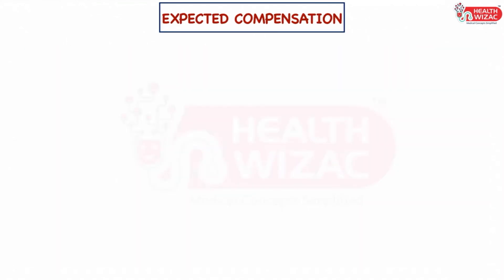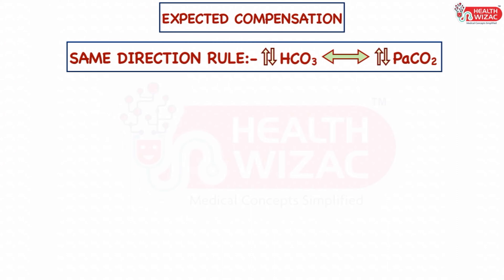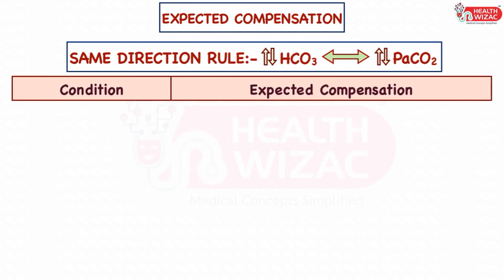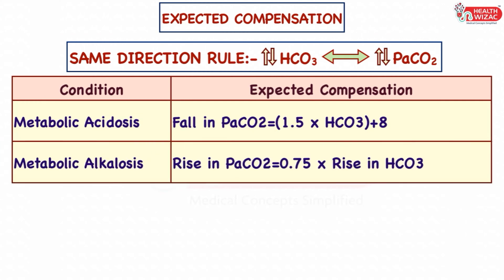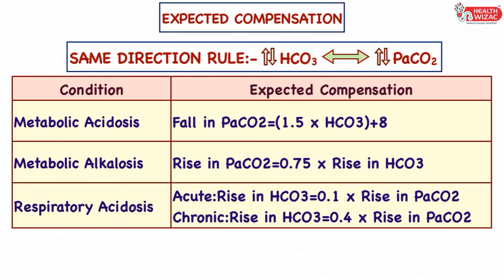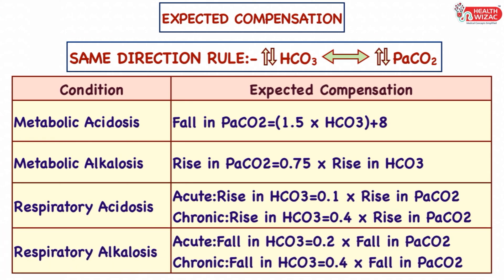Step 4 is to calculate the expected compensation. Compensation always happens in the same direction — fall in bicarbonate is compensated by fall in PaCO2, and vice versa. For metabolic acidosis, expected fall in PaCO2 equals 1.5 × bicarbonate + 8. For metabolic alkalosis, expected rise in PaCO2 equals 0.75 × rise in bicarbonate. For respiratory acidosis, acute rise in bicarbonate equals 0.1 × rise in PaCO2, and chronic rise equals 0.4 × rise in PaCO2. For respiratory alkalosis, acute fall in bicarbonate equals 0.2 × fall in PaCO2, and chronic fall equals 0.4 × fall in PaCO2.